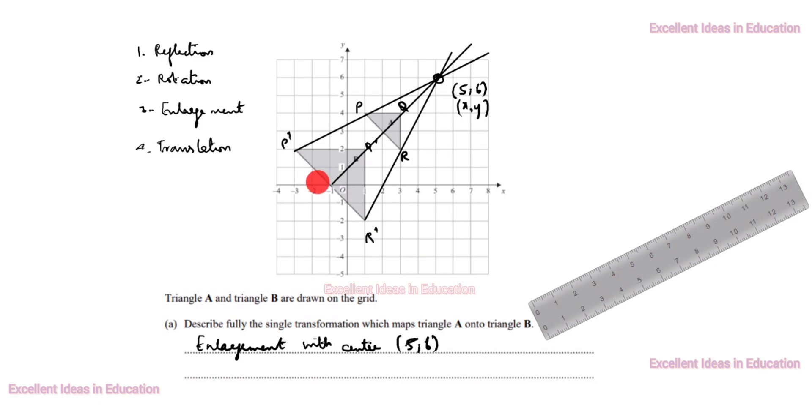Next we will find scale factor. You see this one P to Q. P to Q is 1, 2. P dash Q dash is 1, 2, 3, 4. So, how we will find this one? P dash Q dash divided by P Q equal to 4 divided by 2.